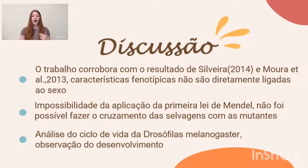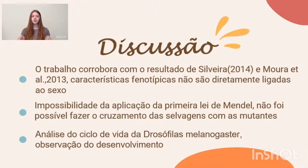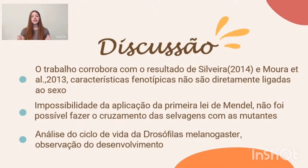Os cruzamentos deveriam ser feitos com moscas mutantes e selvagens. As selvagens são facilmente encontradas na natureza, mas as mutantes dificilmente são encontradas em ambiente natural. Para obtê-las, foi necessário entrar em contato com a Universidade Federal de Santa Catarina, que informou manter escassa quantidade de laboratórios. Mesmo com a impossibilidade de fazer os cruzamentos com os dois tipos de drosófila, ainda assim pudemos analisar as características do ciclo de vida.